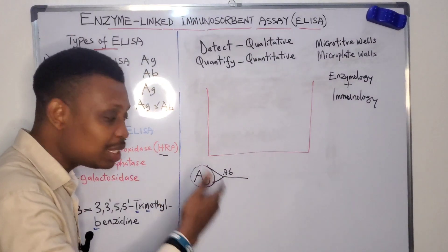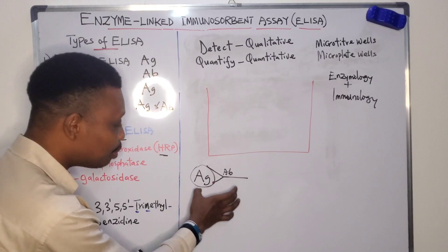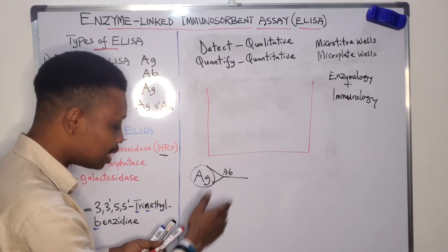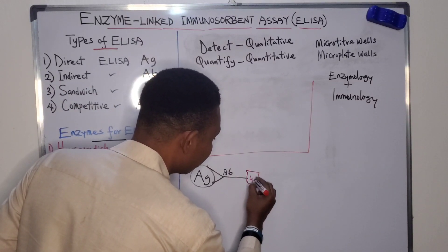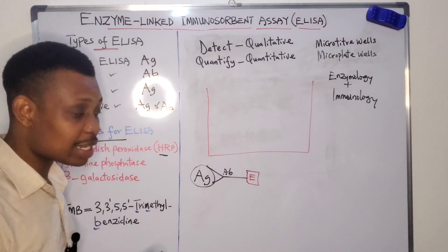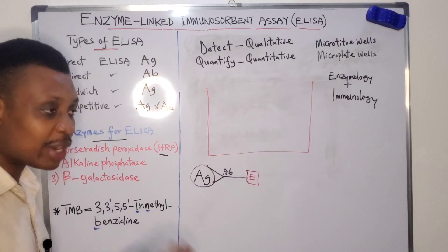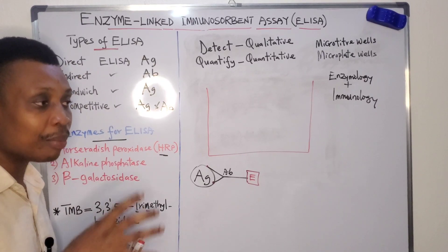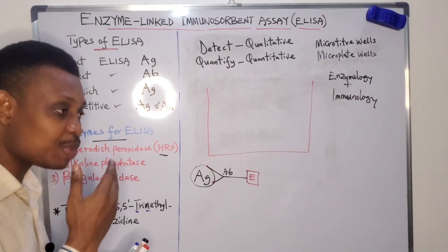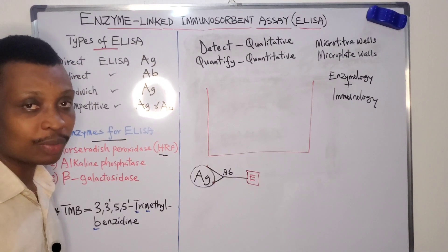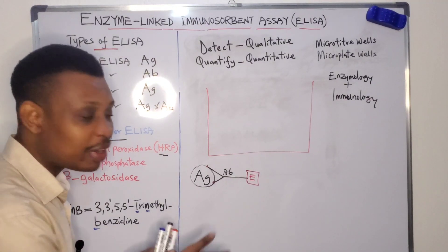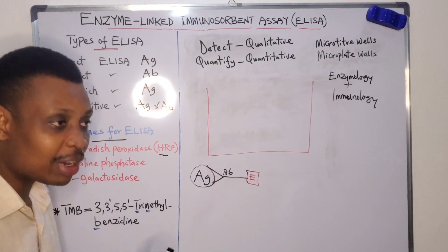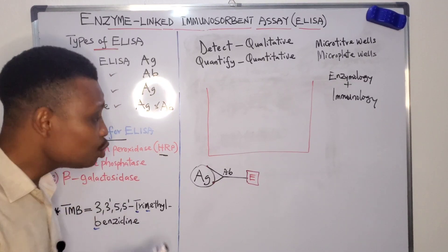As the name implies, an enzyme must be linked — so this antigen-antibody complex must be linked to an enzyme, and the portion of this complex that must be linked to the enzyme is the antibody. An enzyme stimulates or catalyzes a reaction, but before such reaction occurs there must be a specific substrate which it can bind to and convert to product.